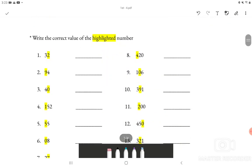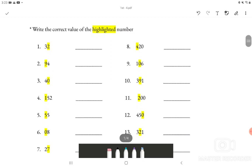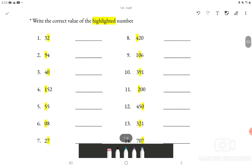Moving on to the second part of this first section we have direction saying write the correct value of the highlighted number. And then we will start off with number 1. Number 1 says 32 and the highlighted part is 2 which is in the ones place. So the value for it will be just 2.